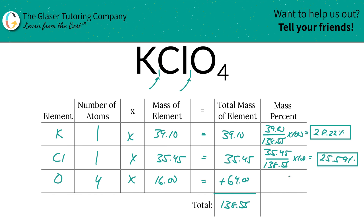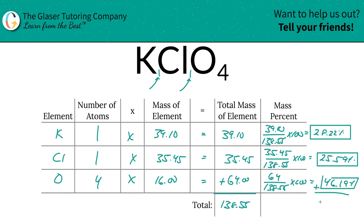And then last but not least, we do the same thing for oxygen: 64 divided by 138.55, multiply that by 100. This is a simple percent calculation — part over whole times 100 — and the percent here is going to work out to be 46.19%. If you added those percents together, it should be 100%, or very close to it. If you use exact percents, it should be exactly 100, but sometimes when you round it might be off by a hundredth or so.